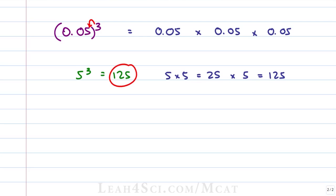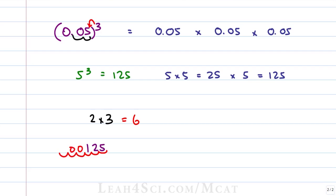Now that we have the number 125, let's see what to do about the decimal. We have to move the decimal space twice to the right to get a whole number — that's 2. The power is 3, so we multiply by 3: 2 times 3 is 6. So we have to move the decimal 6 spaces back: one, two, three, four, five, six — for an answer of 0.000125.